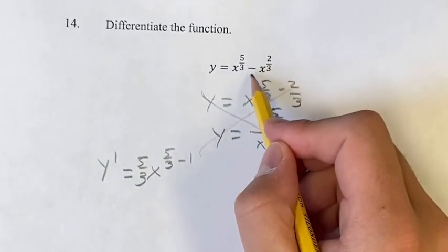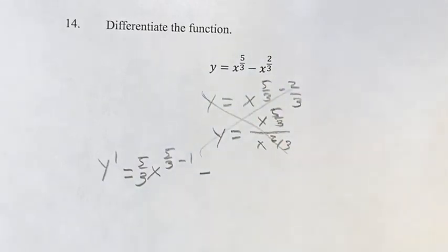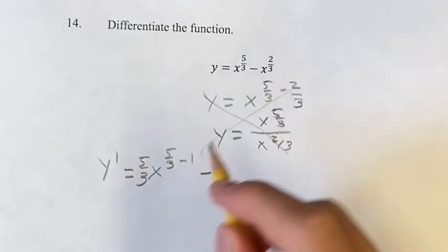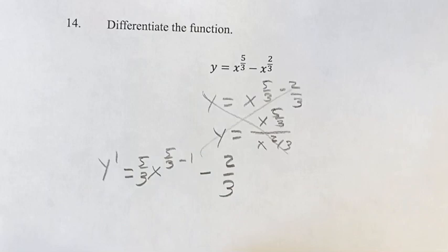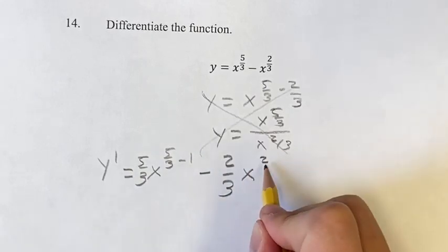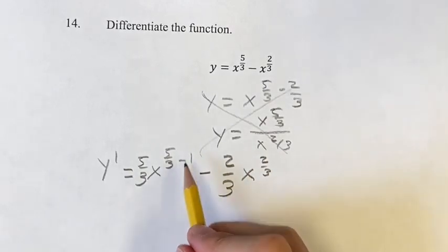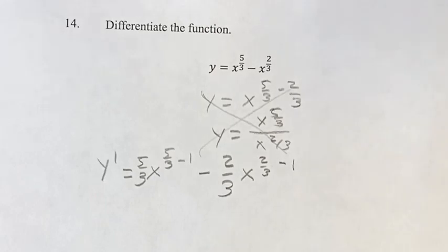We're going to do the same thing with this. Think of the coefficient as negative 1, so we're still subtracting. Bring the exponent down, minus 2/3 x to the 2/3. And then, again, we're subtracting 1 from the exponent, 2/3 minus 1.